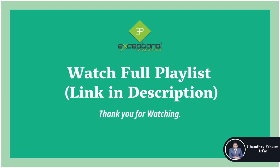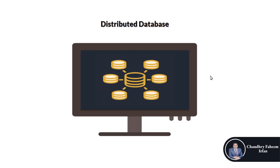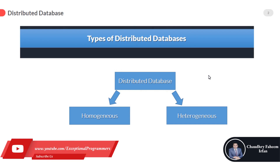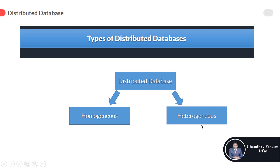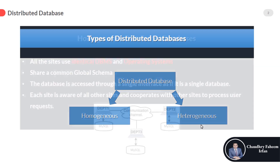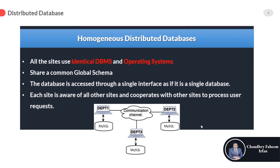Welcome to this lecture. In this lecture we are going to learn about types of DDBMS — types of distributed database management systems. Here are the two types: number one is homogeneous and the second one is heterogeneous.